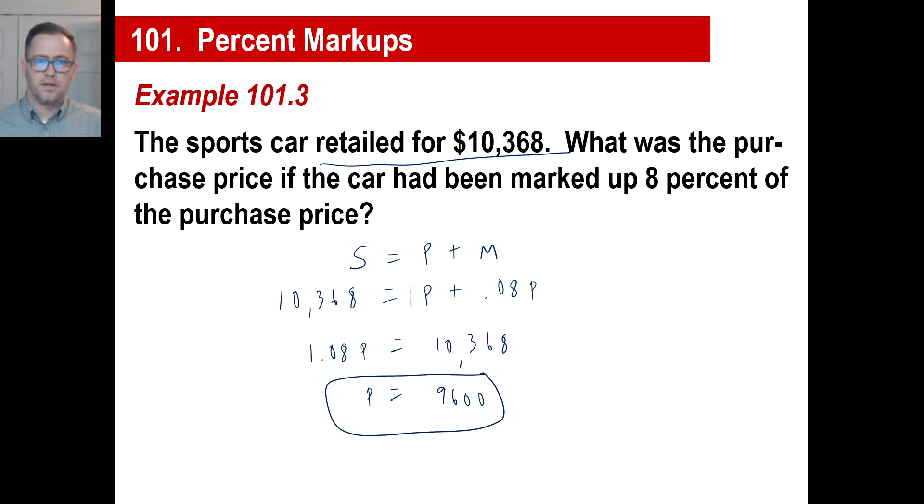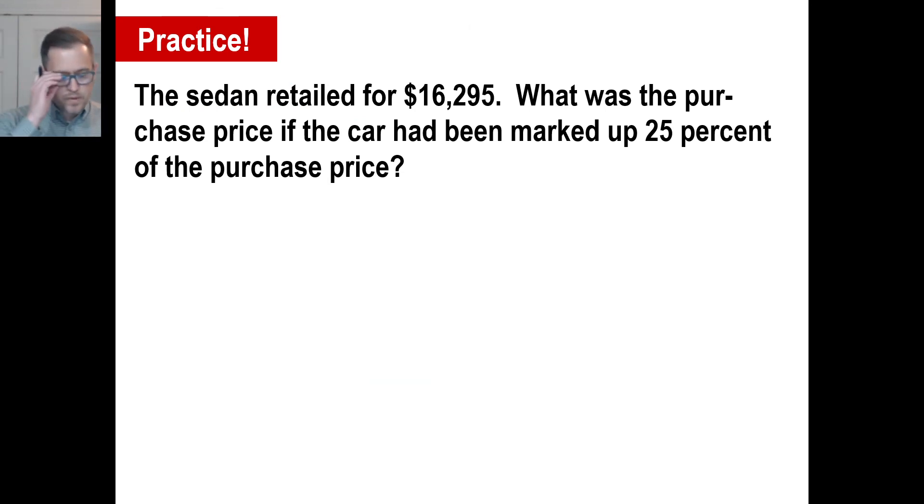Try the practice problem in your book. Give it a whirl, pause it, and try that. And again, this is your formula. It never changes. Retail means the selling price: $16,295.